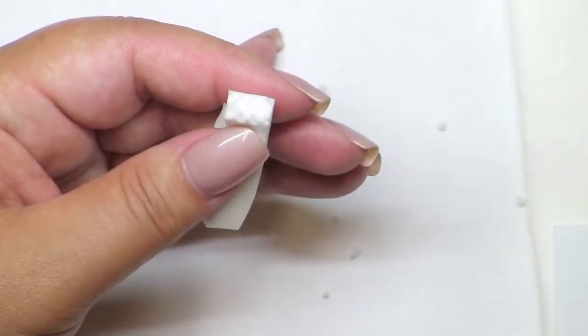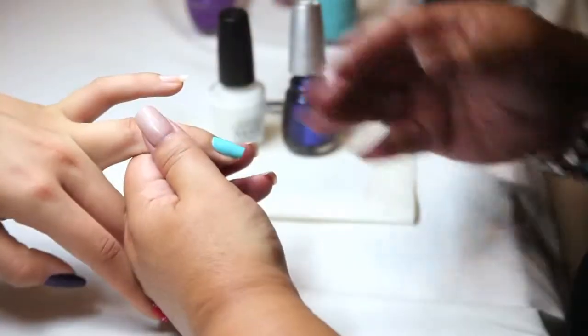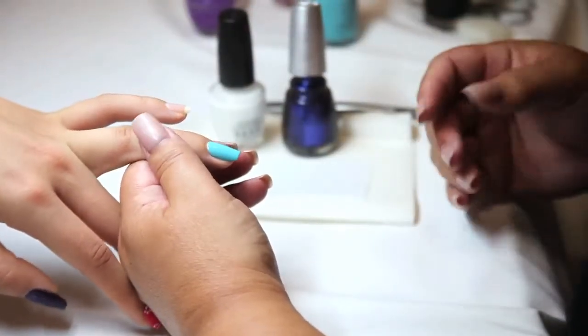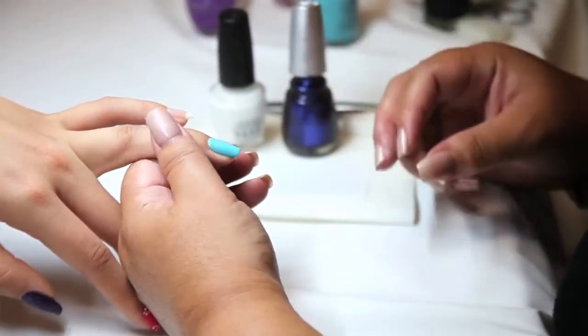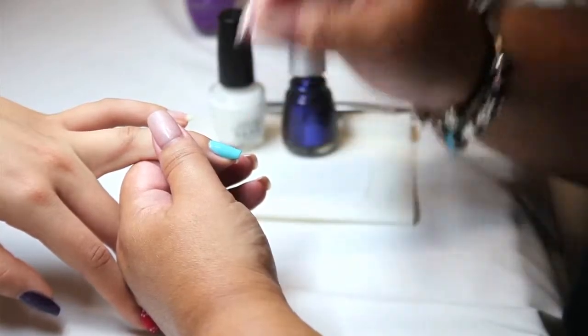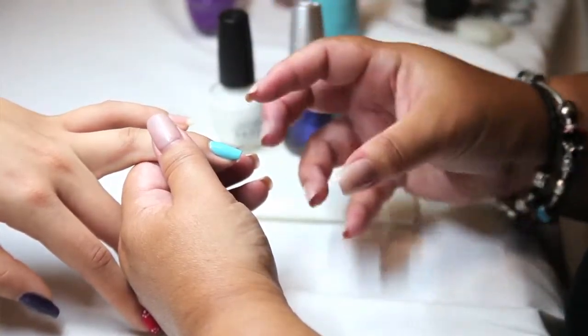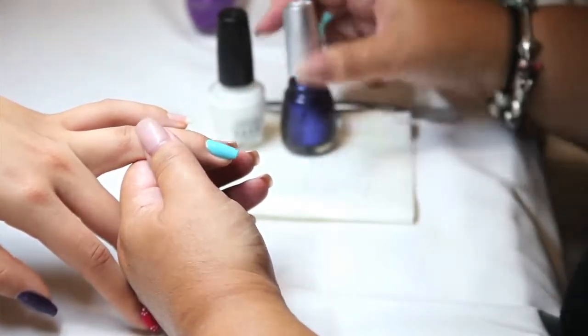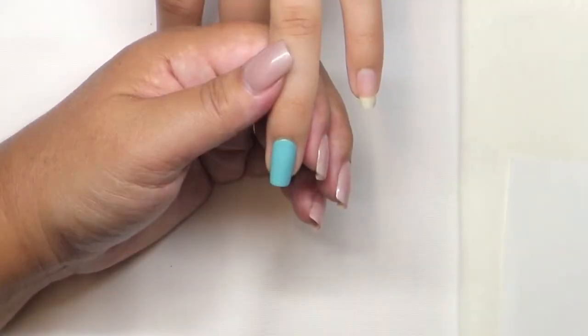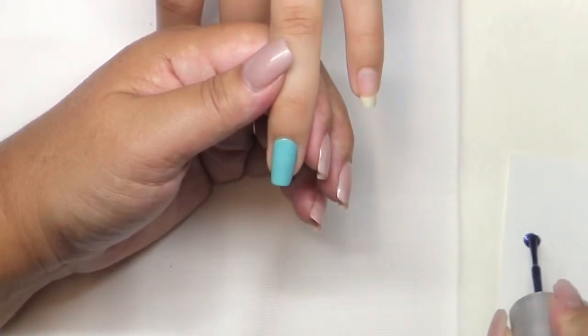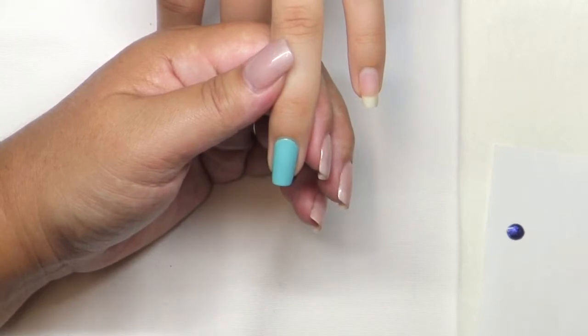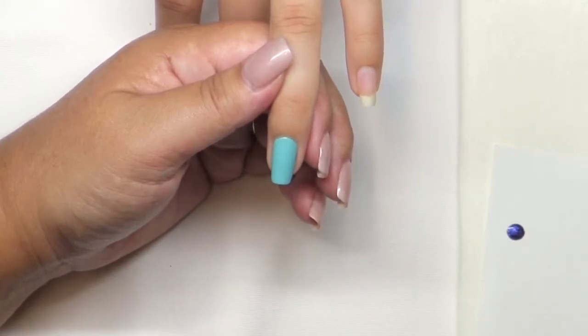Our base color has dried. It's not 100% dry, but dry enough that when we apply and sponge on our color, it's not going to lift our base color off. So I'm going to put a dab of our electric blue, so pretty, and our white on a piece of palette paper.